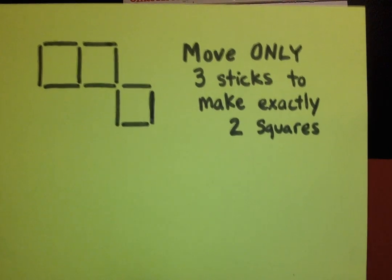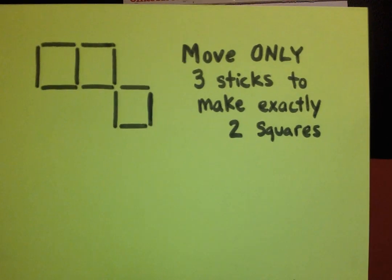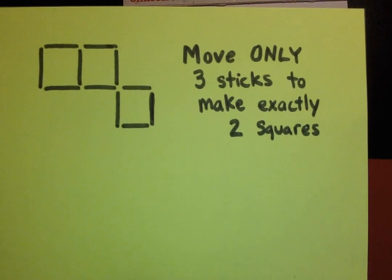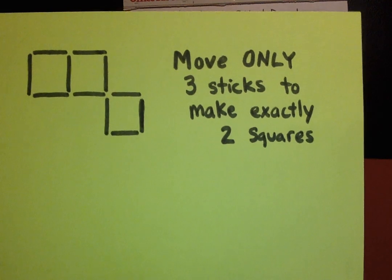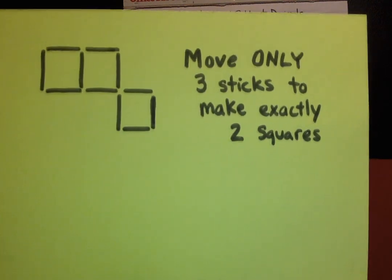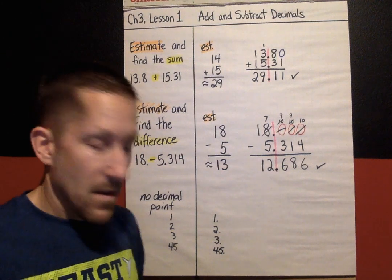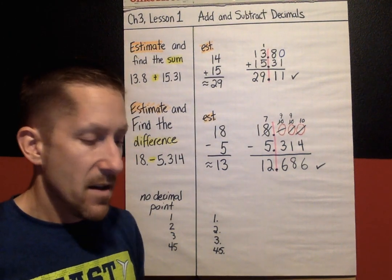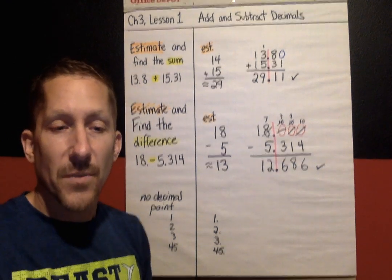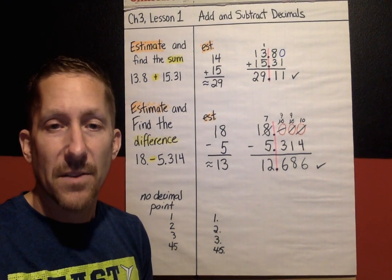So, copy that down. Try to play around with it. Move only 3 sticks and then you have, and in doing so, you have to create exactly 2 squares. That's Chapter 3, Lesson 1 with our hidden treasure. And I'll see you shortly at Chapter 3, Lesson 2. Bye-bye.